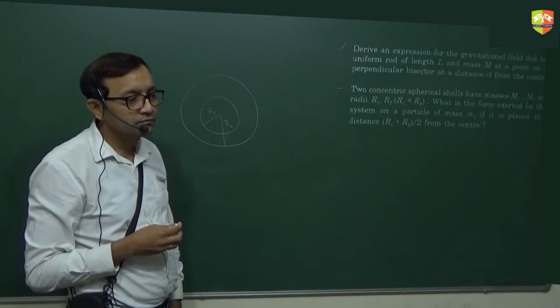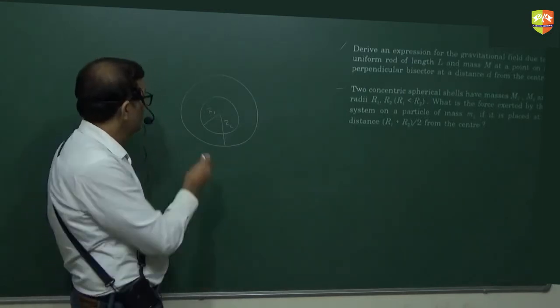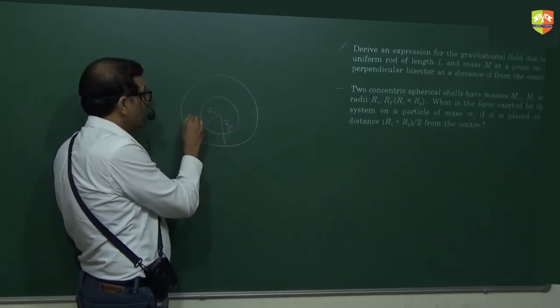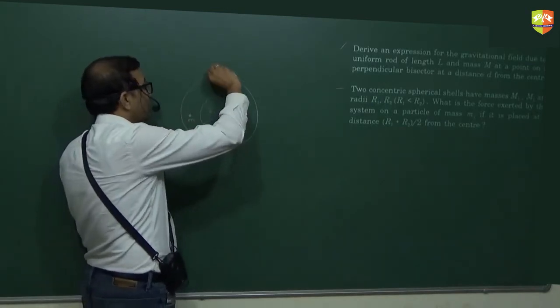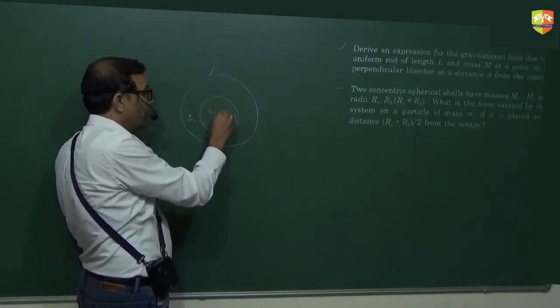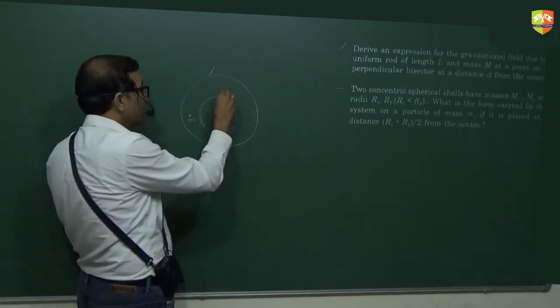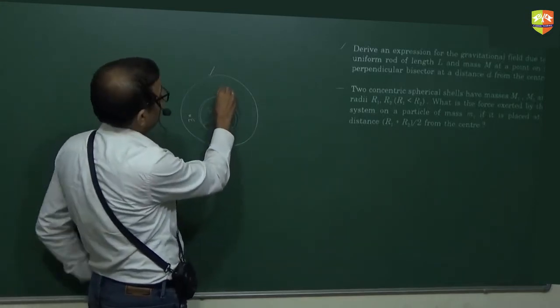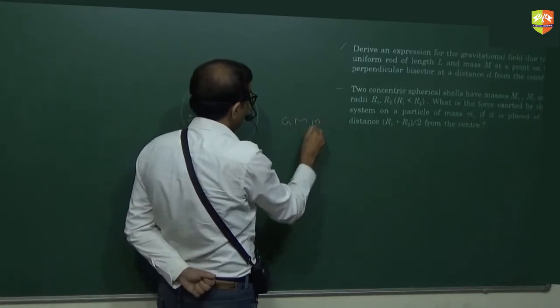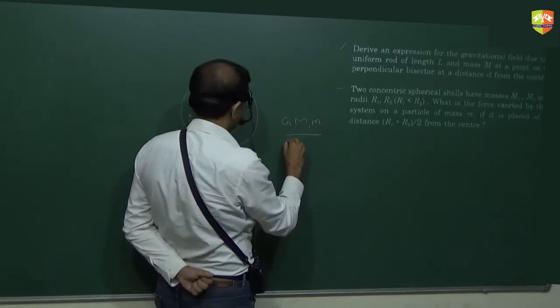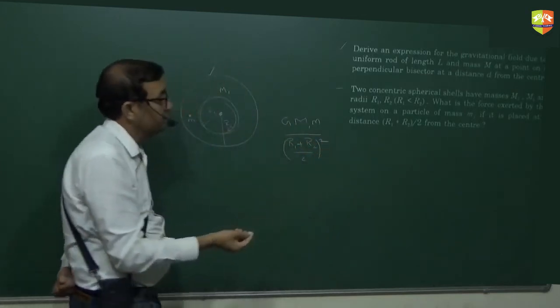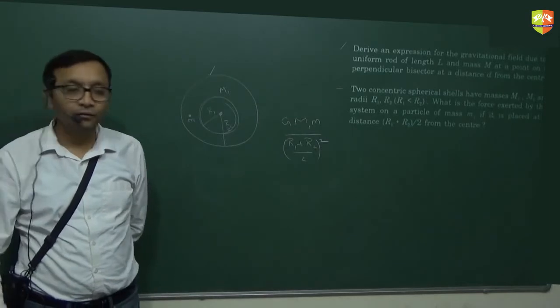Where will be R1 plus R2 by 2? It will be outside R1 but less than R2, right? It will be somewhere here. So this mass won't get affected by the outer shell. The inner shell will act as if it is located at the point, entire mass. So only this mass you have to consider. This is M1, right? So, G M1 M divided by the distance from the center square. So this is the answer. Outer shell will have no effect.